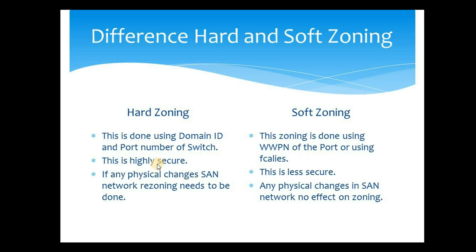If any physical changes happen in the SAN network, in case of hard zoning you need to redo the zoning, but in case of soft zoning that is not required. For example, if a cable connected in port 1 is unplugged and connected to a different port of the switch in the fabric, in hard zoning you will have to re-zone because the port number changes. In soft zoning, where we use WWPN and FC alias, this step is not required — you can easily unplug any cable from any port and connect it to any switch within the fabric.